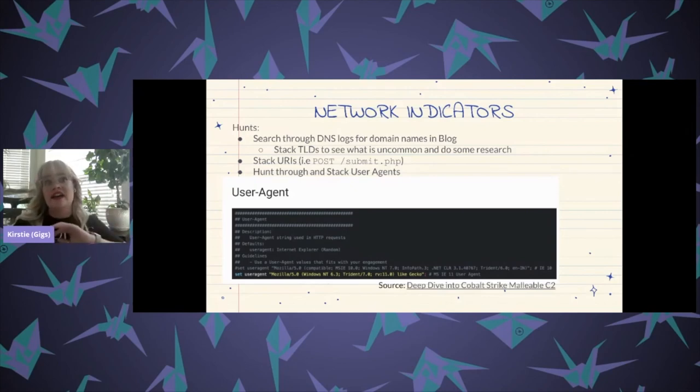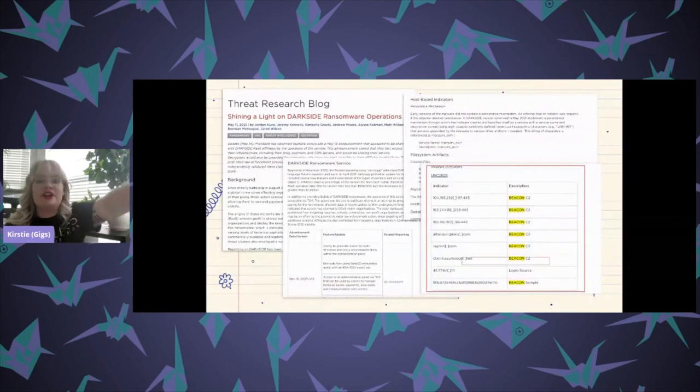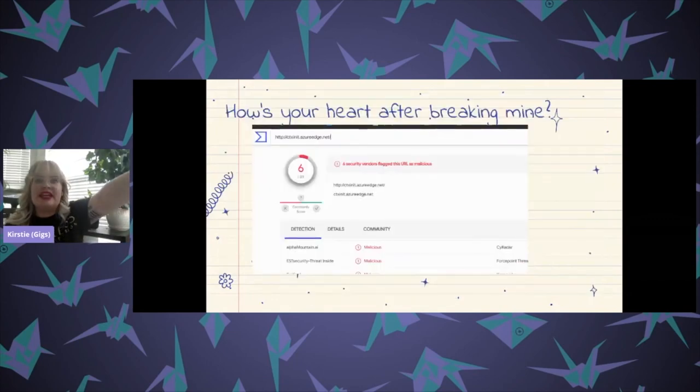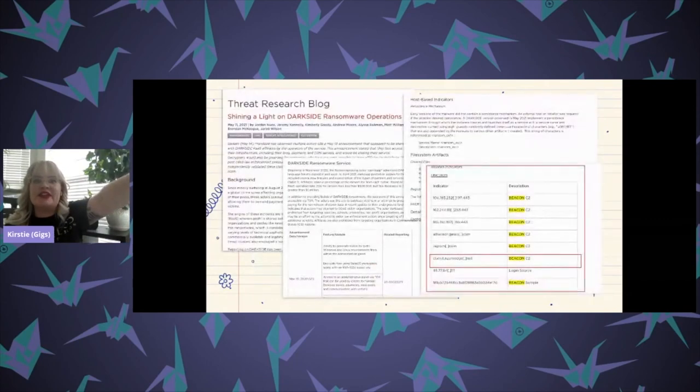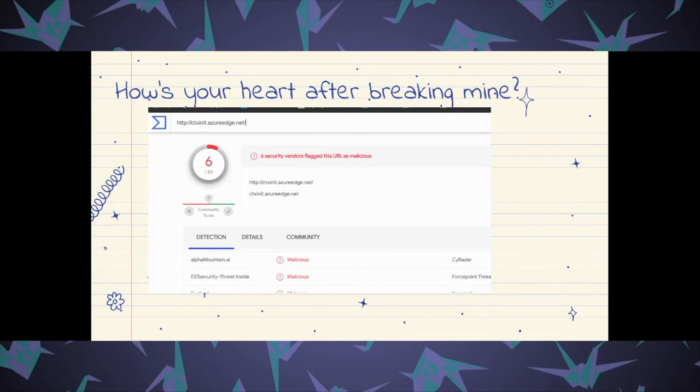You can also hunt through and stack your user agents because Cobalt Strike conveniently allows you to set custom user agents. So go ahead and do that. It's pretty nifty. Because honestly, the last thing that I want to cover, which is pretty difficult to understand sometimes and it's also pretty difficult to detect is this domain here. So one thing that concerns me as a defender is that this has Azure in the top level domain.